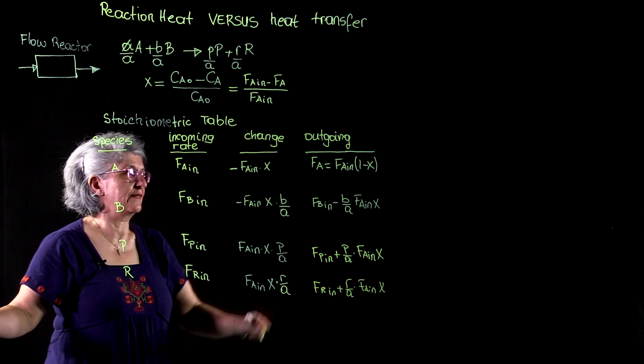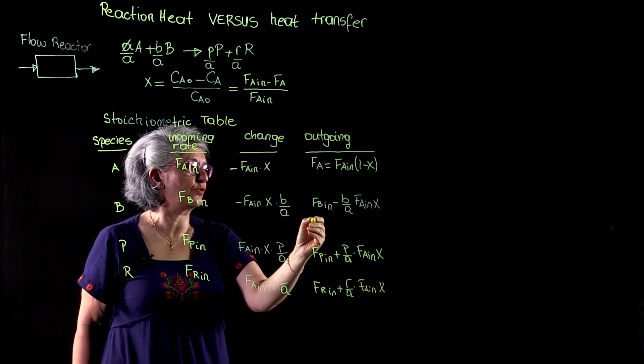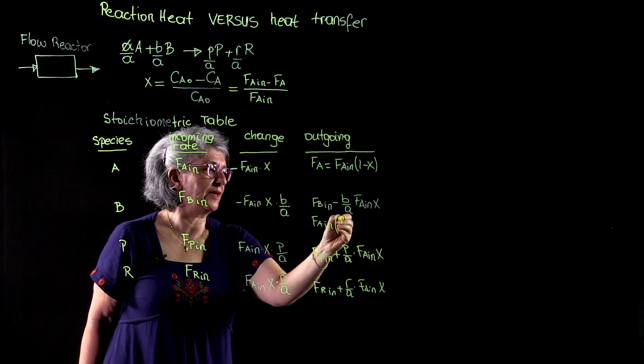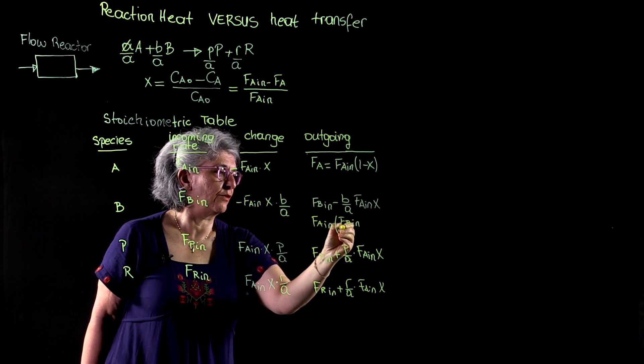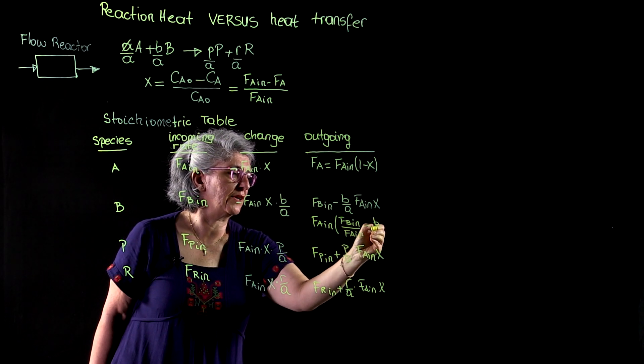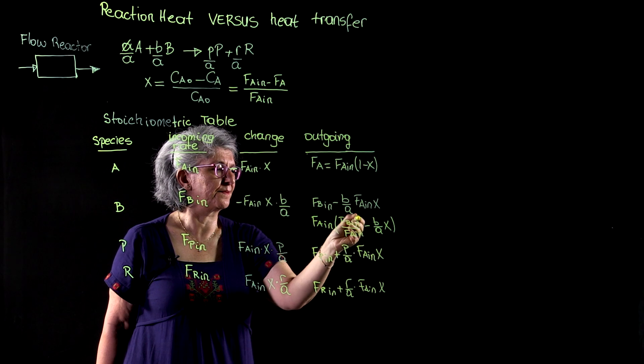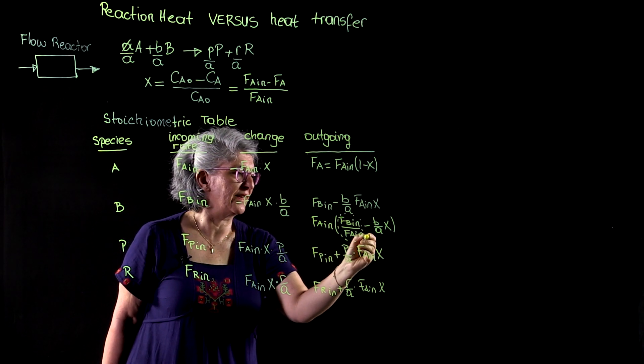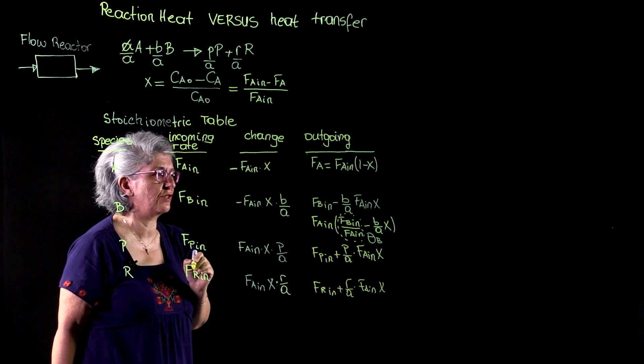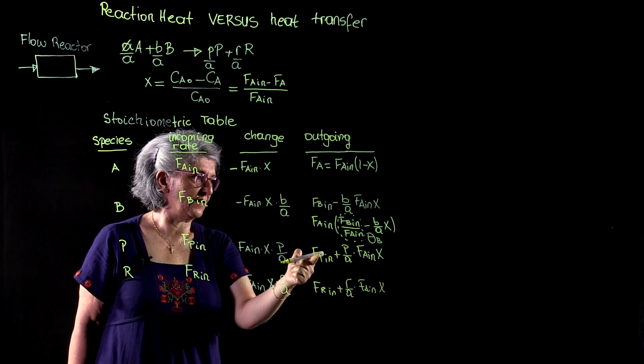Remember, notice that we all have FA in times X terms here. What I will do is just like I have taken this into FA in parentheses, I will take this one into also FA in parentheses. And I'm going to have FB in over FA in minus B over A times X. And I will call this term as theta B, feed stoichiometric ratio of B to A.